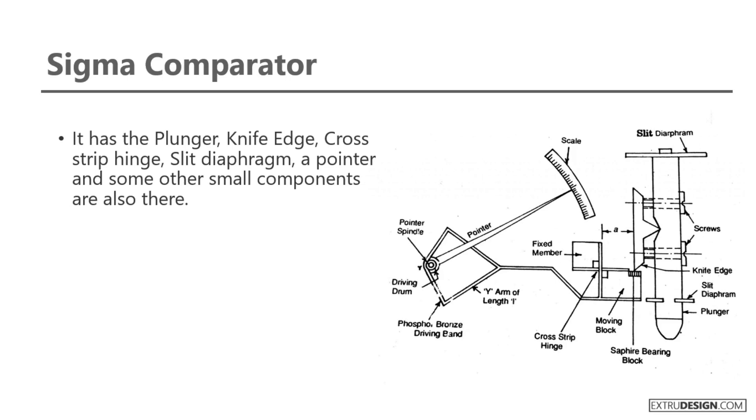Sigma comparator. The sigma comparator has a plunger, knife edge, cross strip hinge, slit diaphragm, a pointer and some other small components. Check the schematic representation of the sigma comparator.